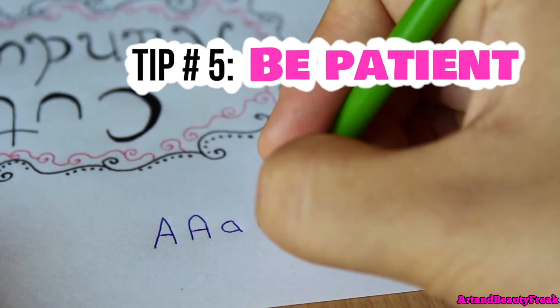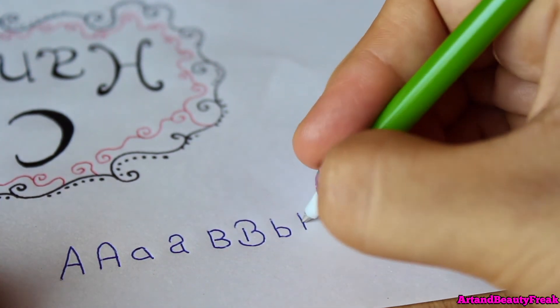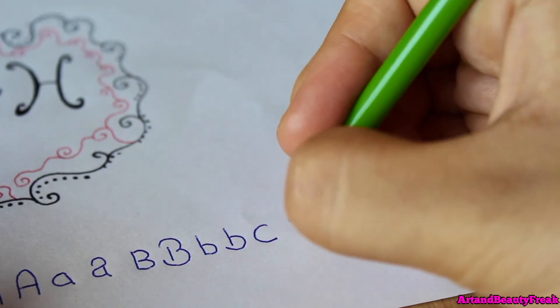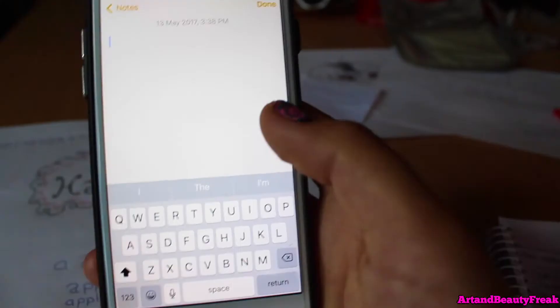Tip number five is of course to be patient. You won't improve overnight. For me, I only started liking my handwriting when I was about like 16 years old or so. It takes a lot of practice and eventually you will improve.